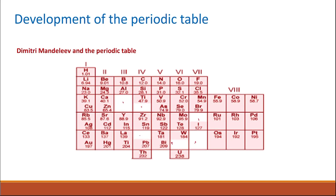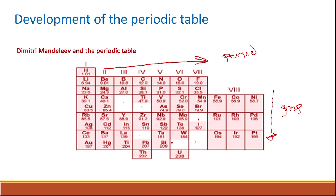The periodic table has periods — the horizontal rows — and groups — the vertical columns. Elements in the same group have similar properties. Mendeleev would switch the order of elements if they didn't fit the properties of the group they had been placed in, moving them to a different group to better match their chemical and physical properties.